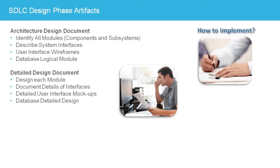Detailed design diagrams may include UML diagrams that show the structure and behavior of objects in the module, data flow diagrams, flow charts, and sequence diagrams. Some projects will use pseudocode to define the actual structure of the code which will be implemented for each module. The user interface will be mocked up to demonstrate the look and feel of the final screens the user will experience. The database detailed design will be created, which specifies the details of each table, including column names and data types, as well as column and table constraints.